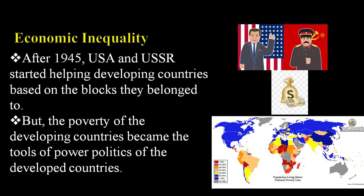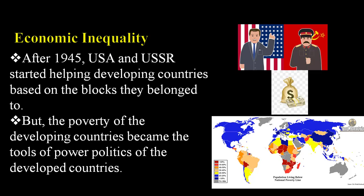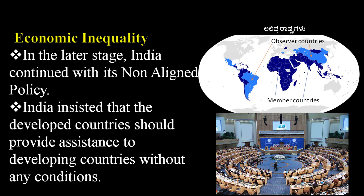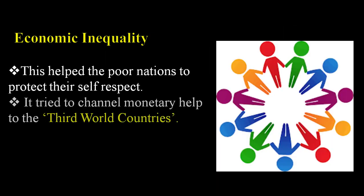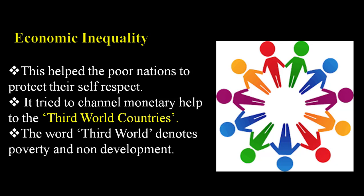After 1945, the USA and USSR started helping developing countries based on the blocks they belonged to. But the poverty of developing countries became a tool of power politics for the developed countries. In the later stage, India continued with its non-aligned policy and insisted that developed countries provide assistance to developing countries without any conditions. This helped the poor nations protect their self-respect.